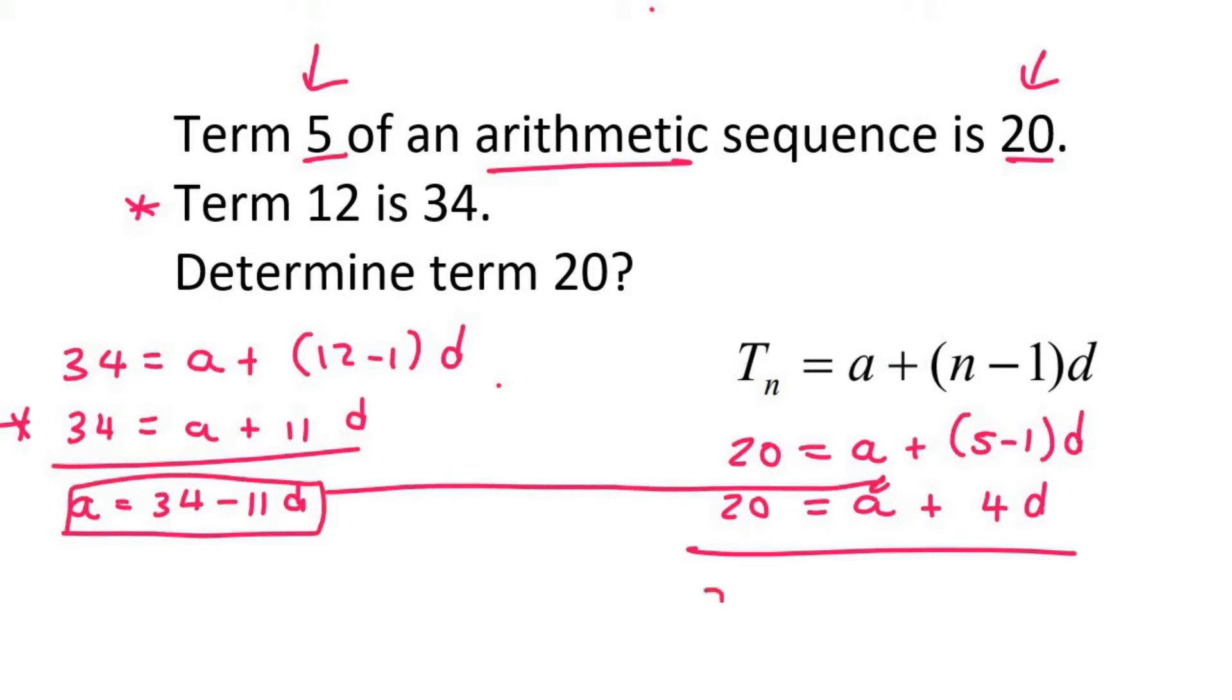I'm then going to substitute that into the place of a over there. So that means we're going to get 20 equals, and then in brackets I'll just say 34 minus 11d plus 4d. Now I can go solve for d.